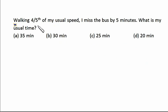Next question: walking at four-fifths of my usual speed, I missed the bus by five minutes. What is my usual time? No paperwork needed — just listen carefully and try it yourself first. If I make my speed four-fifths of usual, my time to cover that distance is five-fourths of normal. Five-fourths is one-fourth extra than one. That one-fourth extra is five minutes, so one-fourth equals five minutes, meaning one equals 20 minutes. My usual time is 20 minutes.